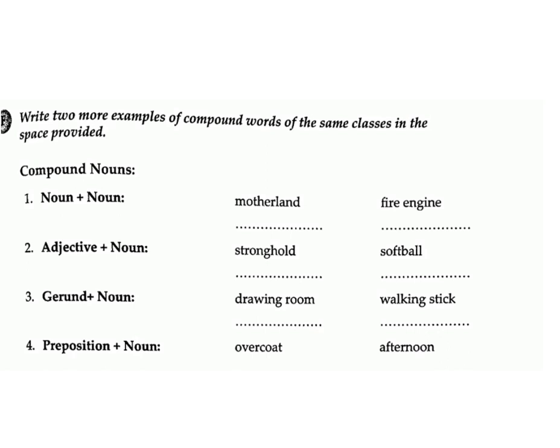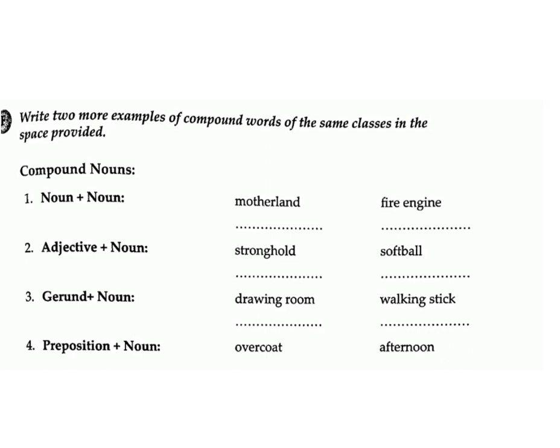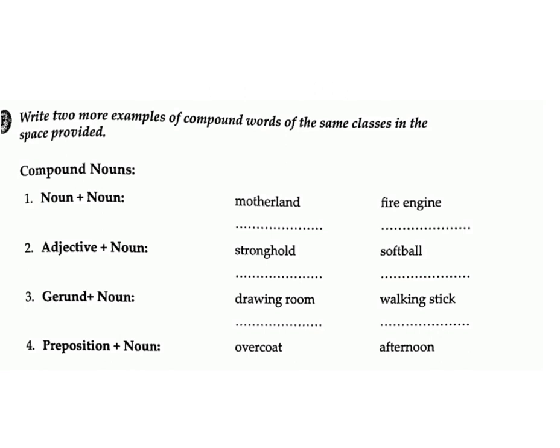F: write two more examples of compound words of the same classes in the space provided. Compound nouns. 1. Noun plus noun: motherland, fire engine – answers: railway, taxpayer. 2. Adjective plus noun: stronghold, softball – answers: sweetheart, blackboard.